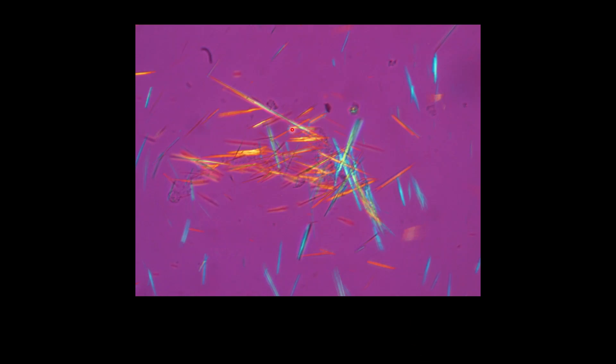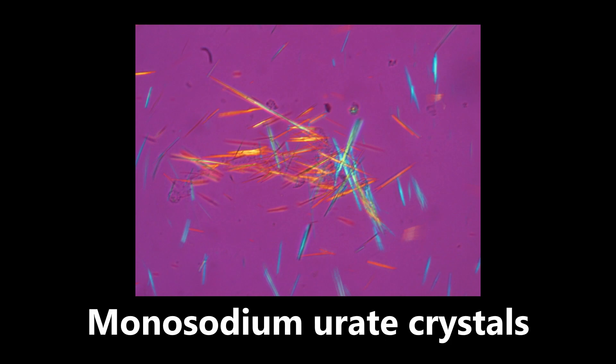This next image shows very sharp, pointy crystals — these are monosodium urate crystals, high yield for gout. The description you need to know: negatively birefringent, needle-shaped crystals seen in gout. These are monosodium urate crystals, which were also featured on the cover slide at the beginning of this presentation.